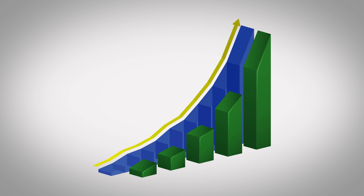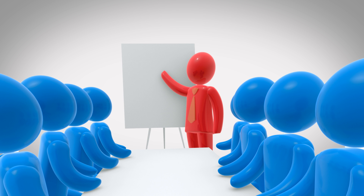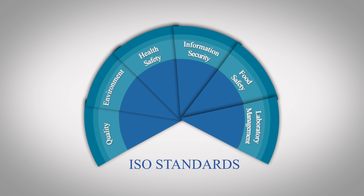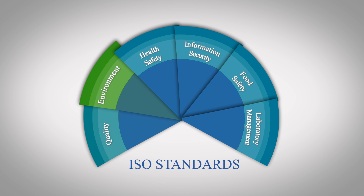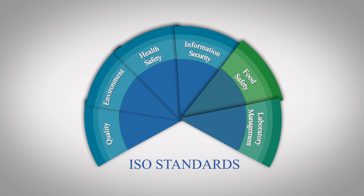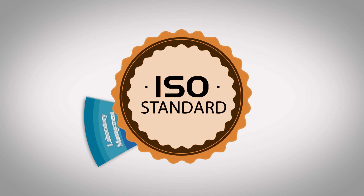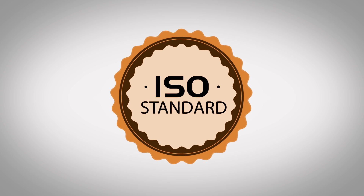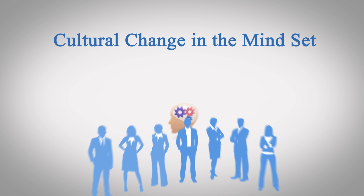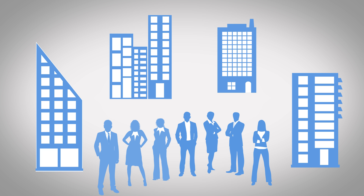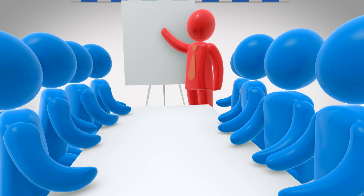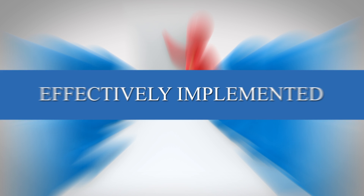Second, you need to plan an elaborate training session for people in the organization. ISO standards — be it quality, environment, health safety, information security, food safety, laboratory management, or any ISO standard — are nothing but bringing a cultural change in the mindset of people in the organization. So you need to make sure that at different levels and different hierarchies, training programs are planned out and effectively implemented.